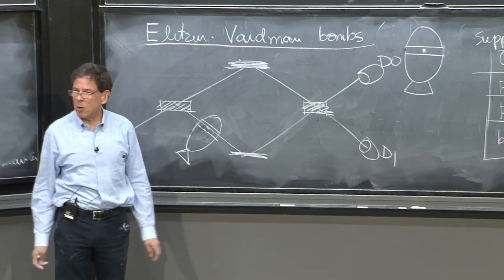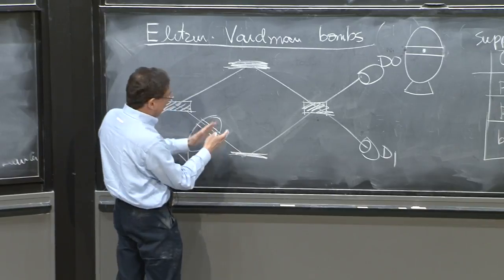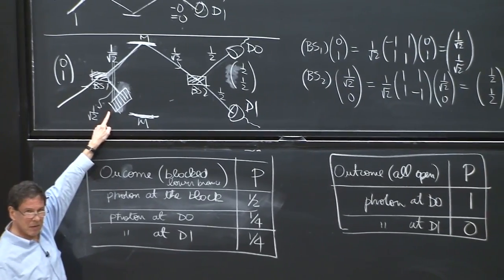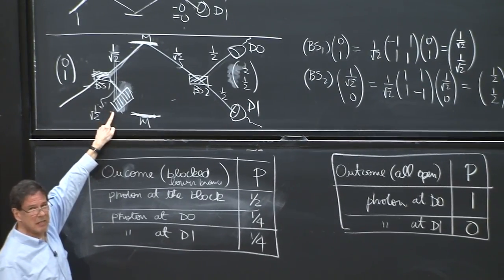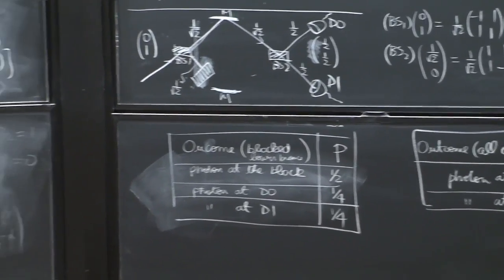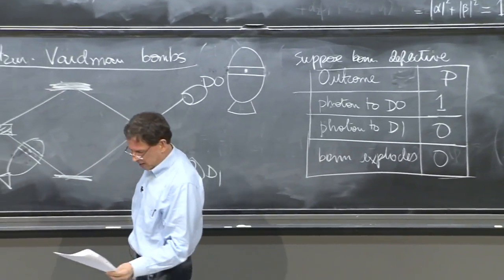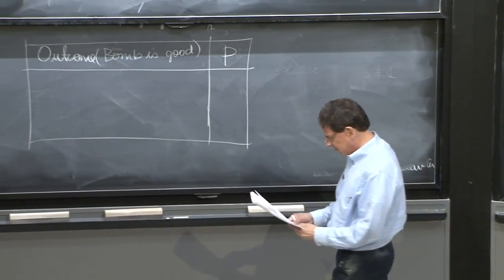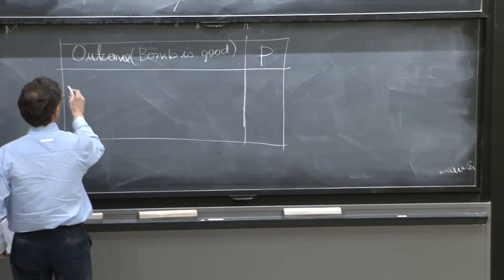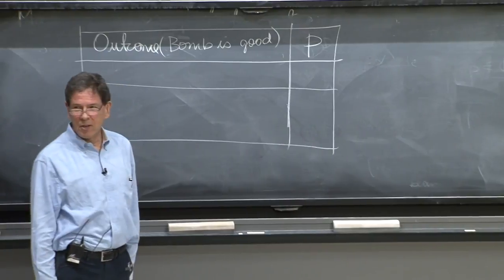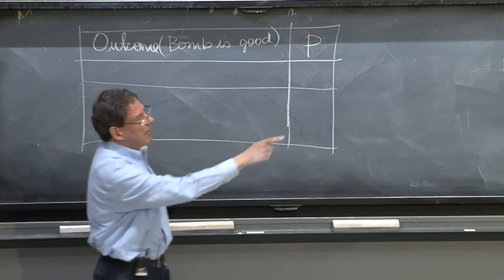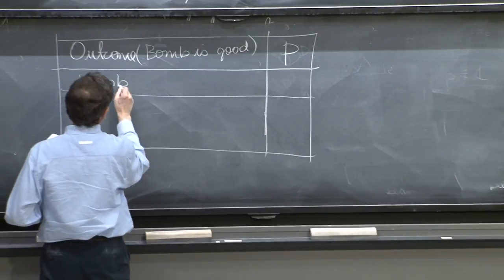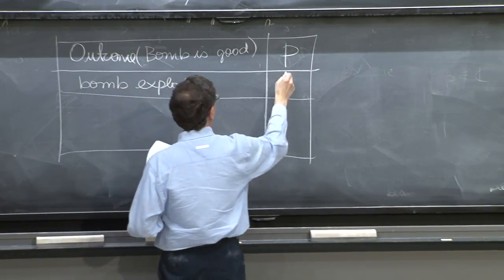So you have your Mach-Zehnder interferometer. And you've really done the equivalent of this, if the bomb is really working. You've put a block of concrete. It's going to absorb the photon. So if the bomb is really working, the outcome are the following. Well, I'm sorry to say, your lab will explode half of the times. Because the photon at the block happens, and bomb explodes with probability one-half.